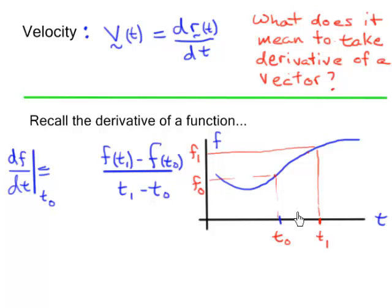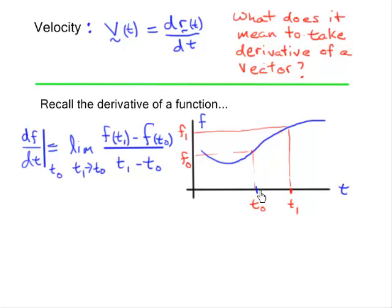We divide that by the difference in time, t1 minus t0. And finally we take this quotient in the limit as t1 approaches t0 — in other words, when the duration between the two times gets vanishingly small — and that's my derivative. When we let t1 approach t0, we get two times very close together and two f values very close together, and this ratio of the change in f divided by the change in time starts looking like a slope. That's the definition of a derivative of a function.